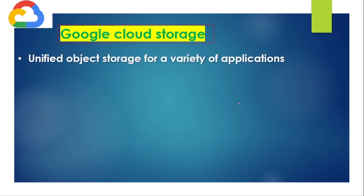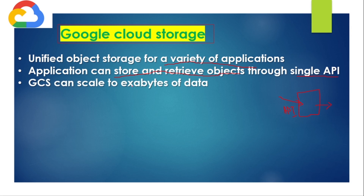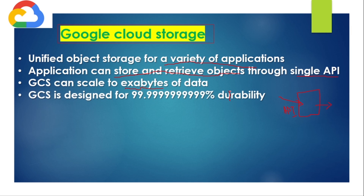Google Cloud Storage provides unified object storage for a variety of applications. Applications can store and retrieve objects through a single API — you write data to the storage device using this API, and retrieve it the same way. GCS can scale to exabytes of data, meaning there is no restriction on the amount of data you store; you simply pay according to usage. GCS is designed for 99.9999% durability, meaning the chances of losing your data are approximately nil.